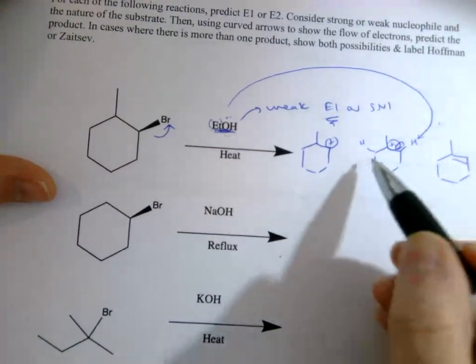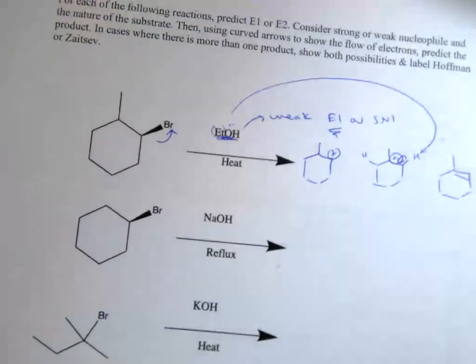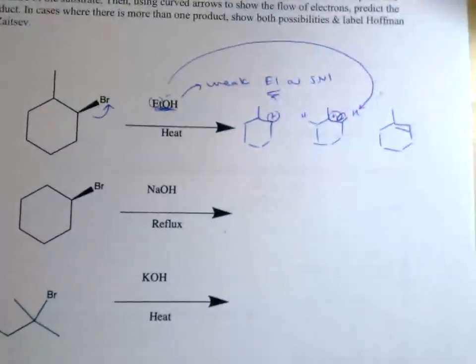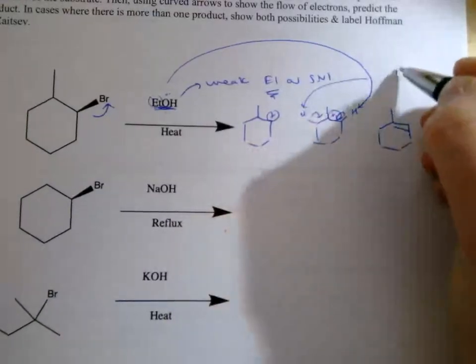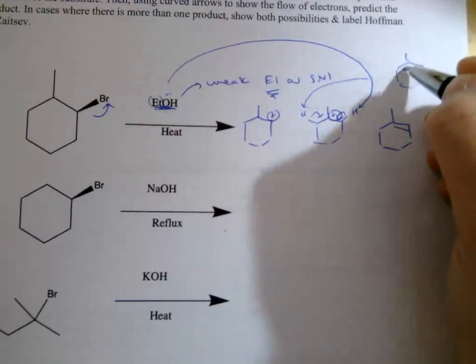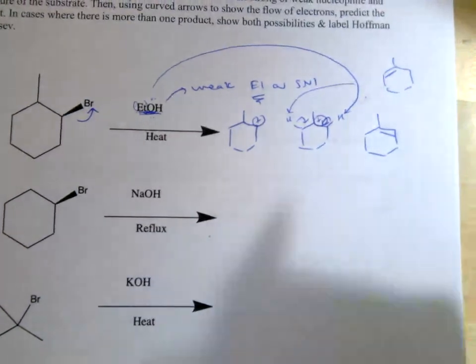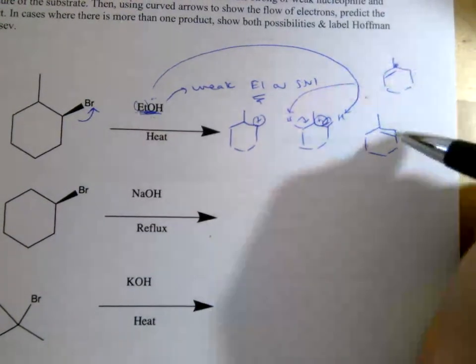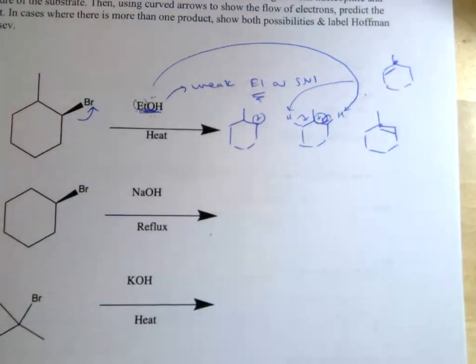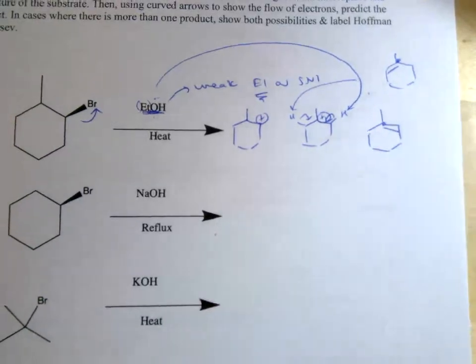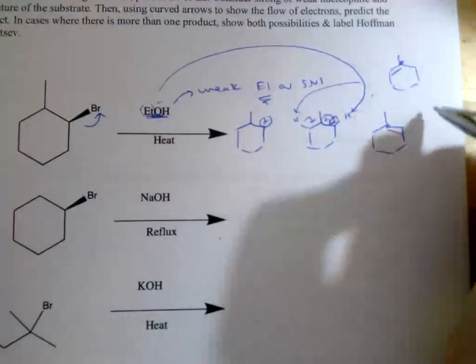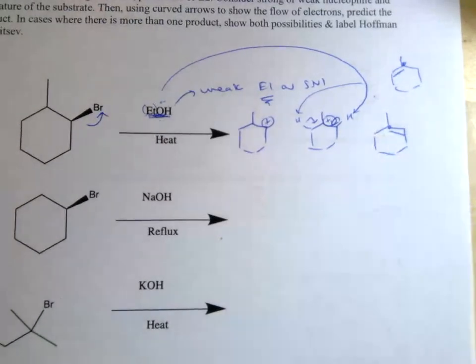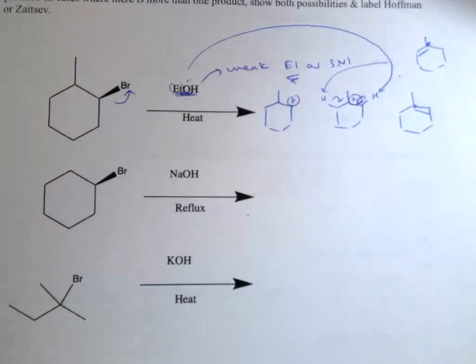Normally we would have to consider Saitsev versus Hoffman, but there's actually only one product possible because if we took it from the other side of the carbocation it would end up in the same thing. If instead I had taken this hydrogen, we'd still end up with the same molecule. It doesn't matter about stereochemistry because that is flat, so this would be the product. There's no Hoffman versus Saitsev because there's only one possible product.